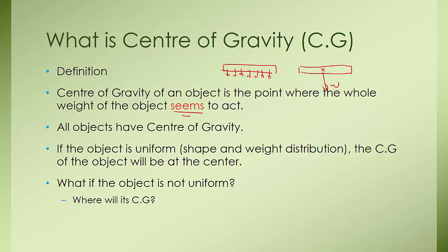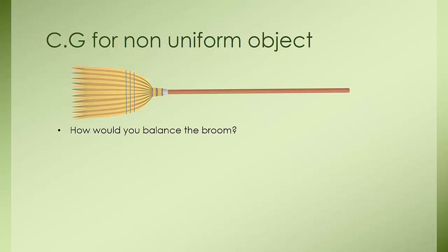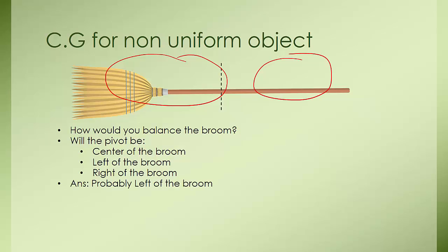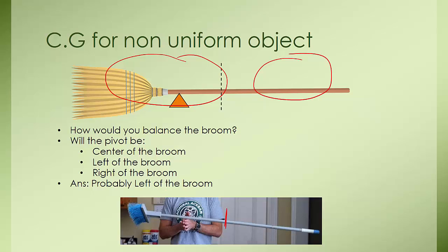But what if the object is not uniform? Where would the center of gravity be? I'll use this broom to illustrate. How will you balance the broom? Would the pivot be at the center of the broom, at the left side, or somewhere on the right side? Take a moment to think about it. If you want to balance this broom, you'll find that most likely you will balance it on the left side. The point of support will need to be on the left side of the broom.